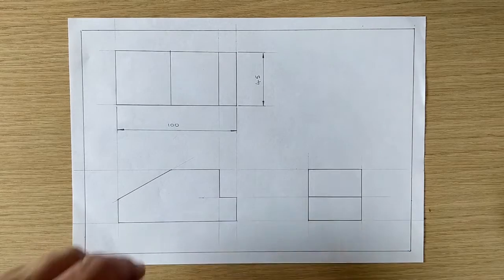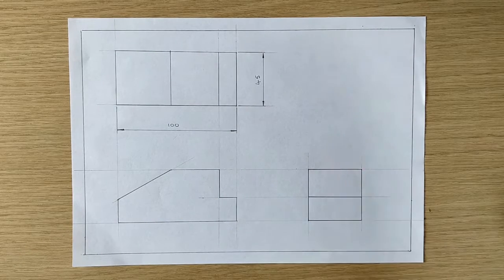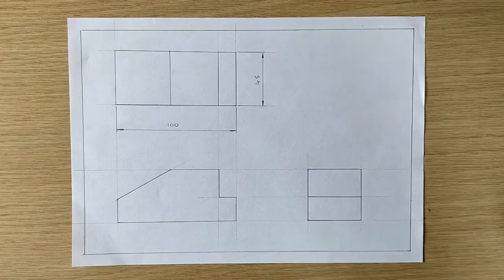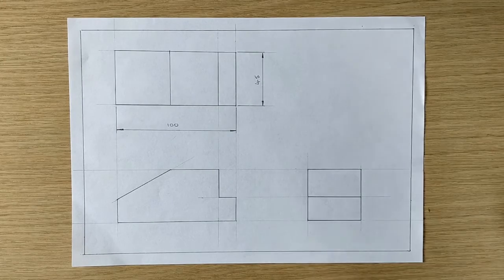So I'm going to write my measurement which is 45 nice and neatly there, trying to make it the same size as the previous number. Notice that I haven't written millimeters. We don't have to do that because all the dimensions on this drawing are in millimeters and we would say that in the title box. So that's the top view dimensioned.